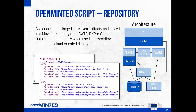Components are currently packaged as Maven artifacts, although this does not have to stay that way. The focus is mainly on Gate and DKProCore. Gate is currently in the phase of transitioning to Maven — the official Gate distribution does not contain Maven artifacts yet, but hopefully the next one will. The nice thing about using Maven or any repository-based approach — it could also be Docker — is that whenever we need a component, it is dynamically acquired by OpenMinted Script, downloaded and run. This kind of simulates a cloud-oriented scenario where we are working with dynamic deployment.